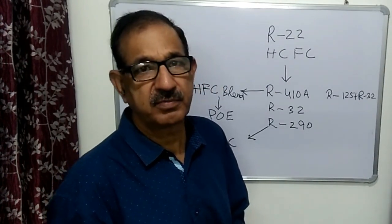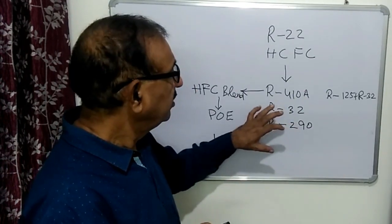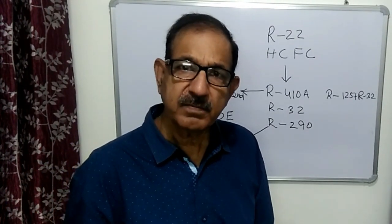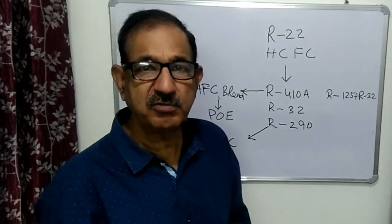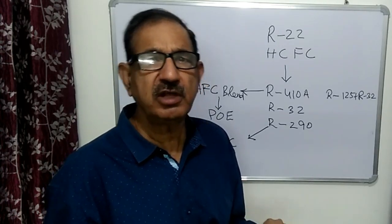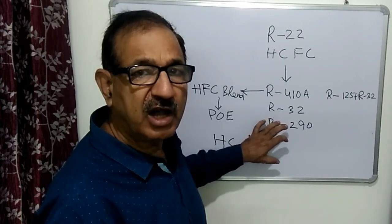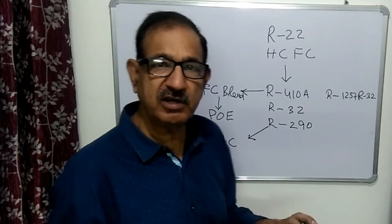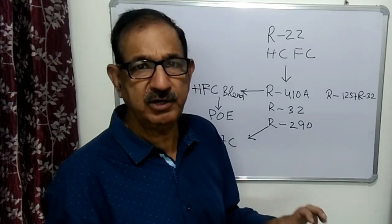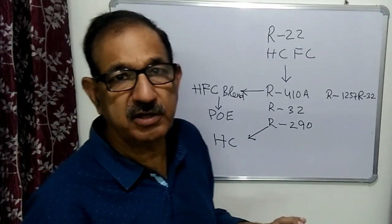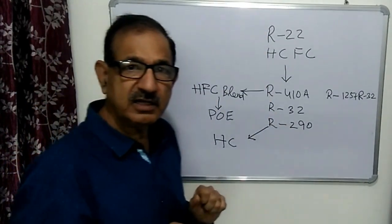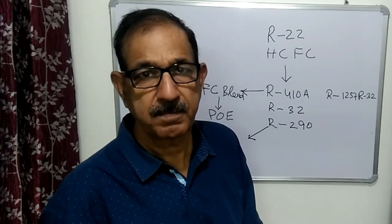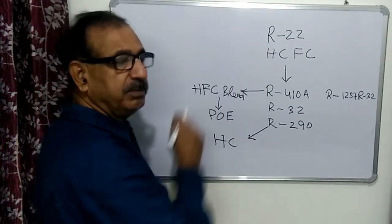The advantage of R290 is that it is very similar to R22 — the pressures are very similar — and it is also called a drop-in refrigerant for R22. We need not make any changes in the refrigeration system and can charge R290 in place of R22. However, we must take care of flammability issues, as this refrigerant is highly flammable.